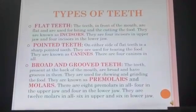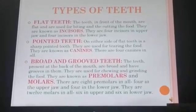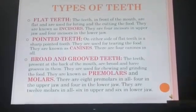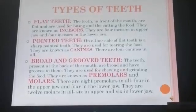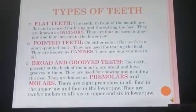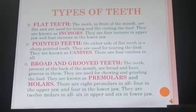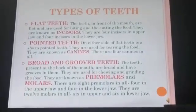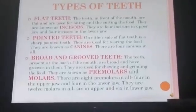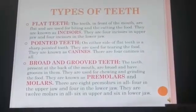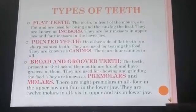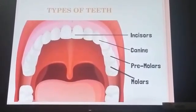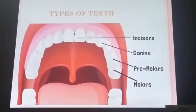Permanent teeth are of four types: incisors, canines, premolars, and molars. Incisors are also known as flat teeth. They are at the front of the mouth and are used for biting and cutting the food. Canines are pointed teeth on either side of the flat teeth, used for tearing the food. Premolars and molars are also known as broad and group teeth. They are present at the back of the mouth and help us to chew and grind food.